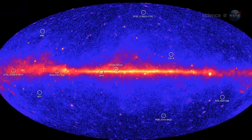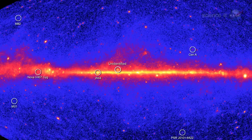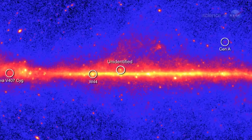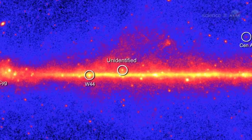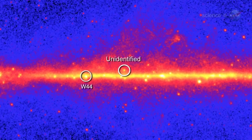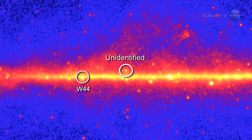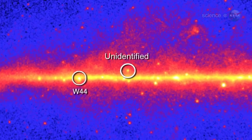The Fermi team recently released the second catalog of gamma-ray sources detected by their satellite's Large Area Telescope. Of the 1,873 sources found, nearly one-third are complete mysteries. No one knows what they are.